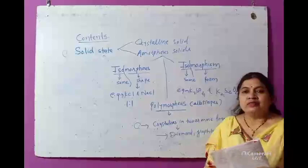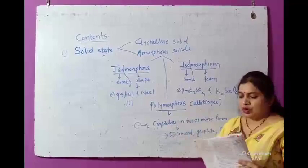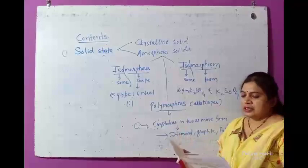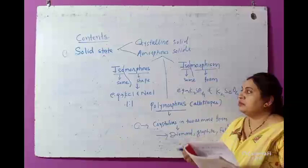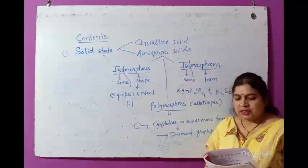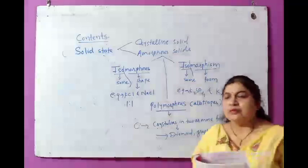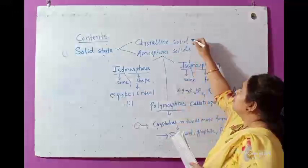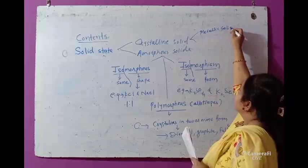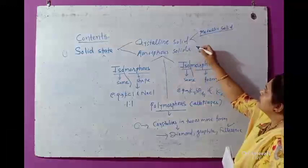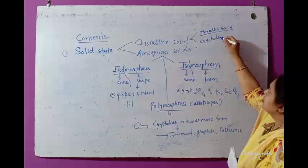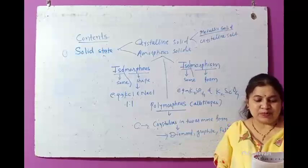So these are the different types and properties of amorphous solid. We have seen: what is solid state, what is the classification of solid state, and the characteristics of crystalline solid and amorphous solid. Crystalline solid examples include metallic solid, KCl, NaCl. Amorphous solid examples include glass, plastic, and rubber.